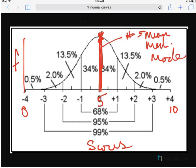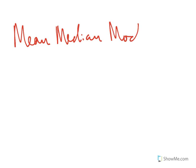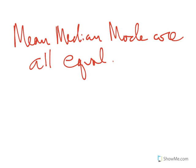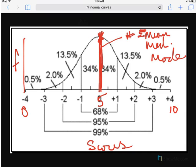So the mean, the median, and the mode will all be the exact same value. Mean, median, and mode are all equal. They're all the same number. They're all located in the same place in the curve.